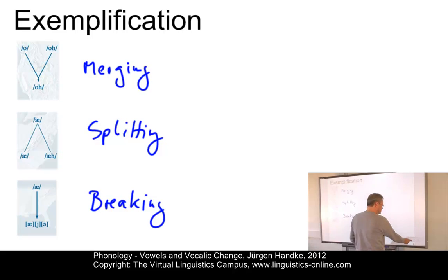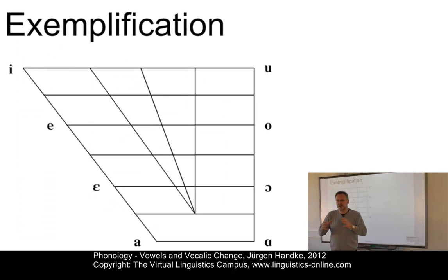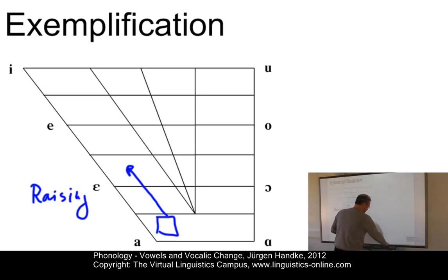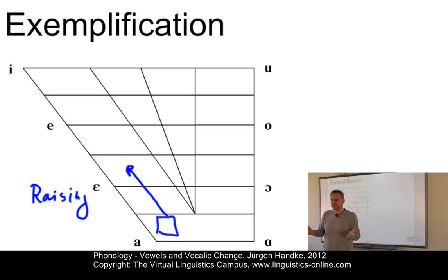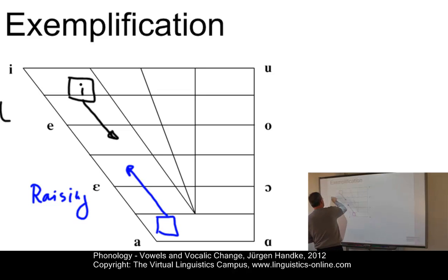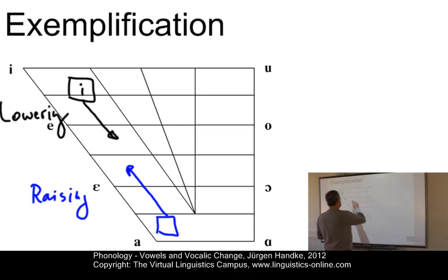In addition to these non-positional changes, we have vowel shifts that can be located on the chart. Raising occurs when a vowel changes from a low tongue position to a higher one — a typical effect being short-a raising, where 'man' becomes 'mæːn.' The opposite is lowering. And if vowels move to the center, we have centering.